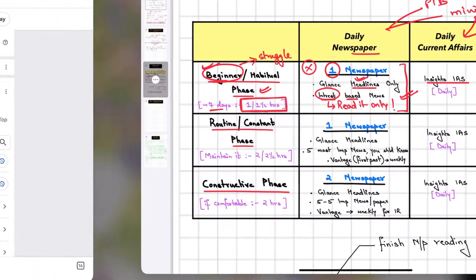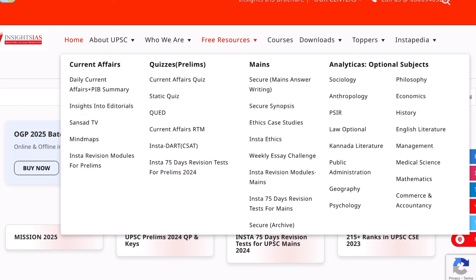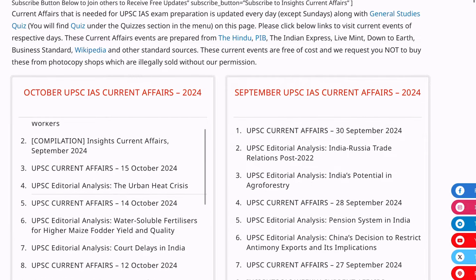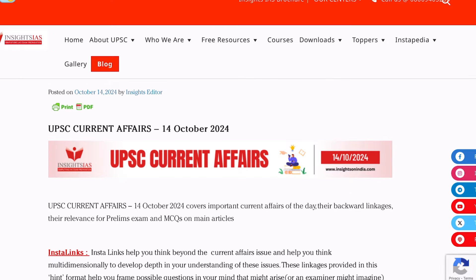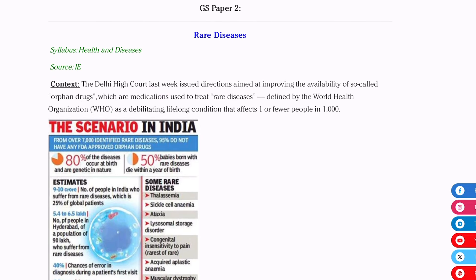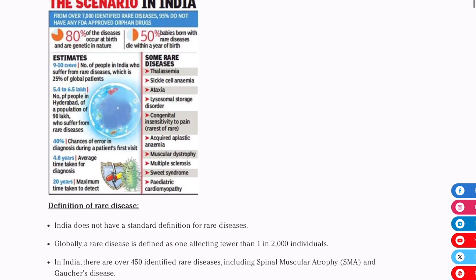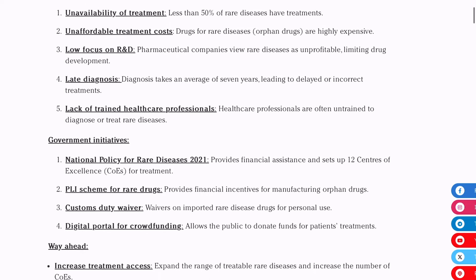After that, go to the Insights IAS website's free resources section and select the daily current affairs and PIB summary section. You can see they explain current affairs properly day-wise every month. For example, take October 14th. Here you need to see - don't overthink, just go through. There's a source given here - a news from Indian Express on rare diseases. It tells you which part of the syllabus it falls under, like the health and diseases section, and breaks it down with background and everything provided in an easy way.